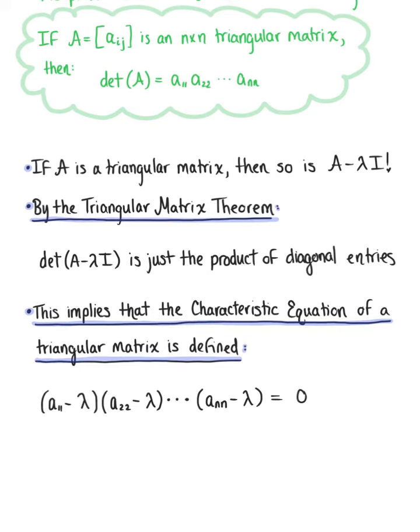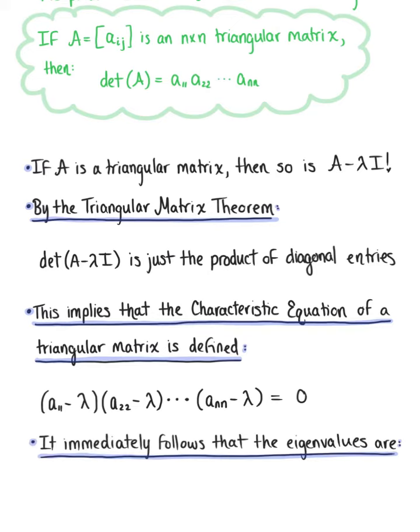From this characteristic equation, it immediately follows that the eigenvalues are defined as lambda sub 1 equals A sub 1 1, lambda sub 2 equals A sub 2 2, and we continue until we reach lambda sub n equals A sub n n.